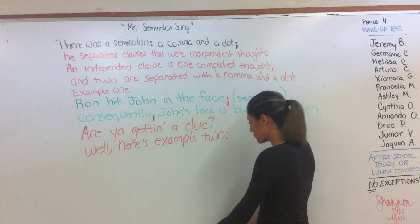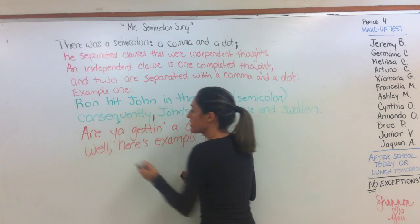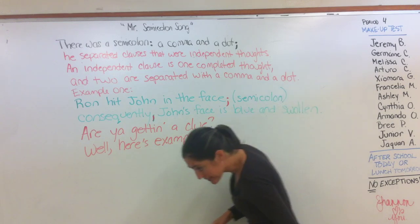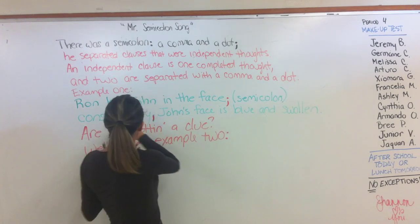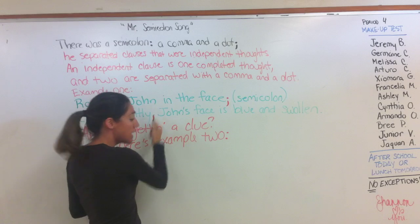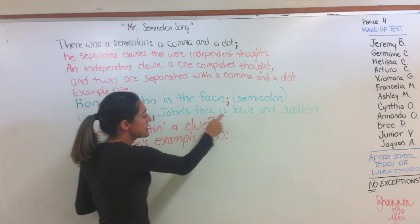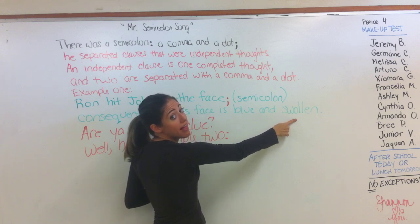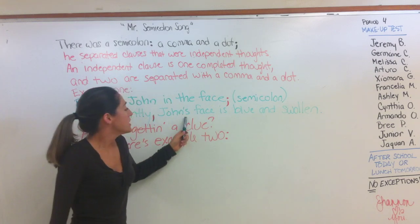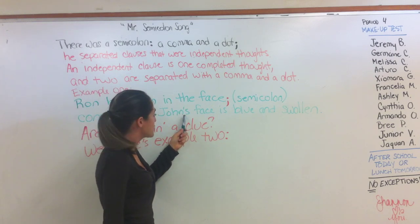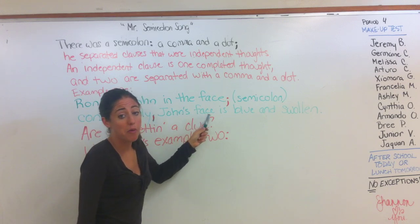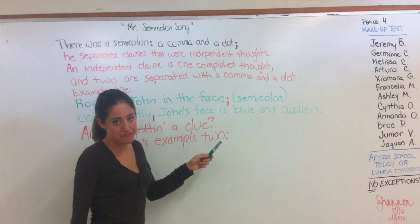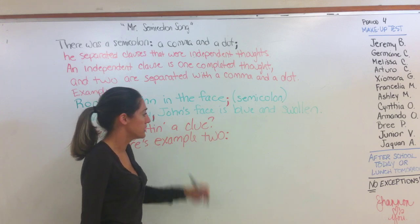'Consequently' — that means 'as a result' — 'consequently, comma, John's face is blue and swollen.' Check the spelling of 'swollen.' Also make sure you have an apostrophe S on John: it's John's face, because the face belongs to John.